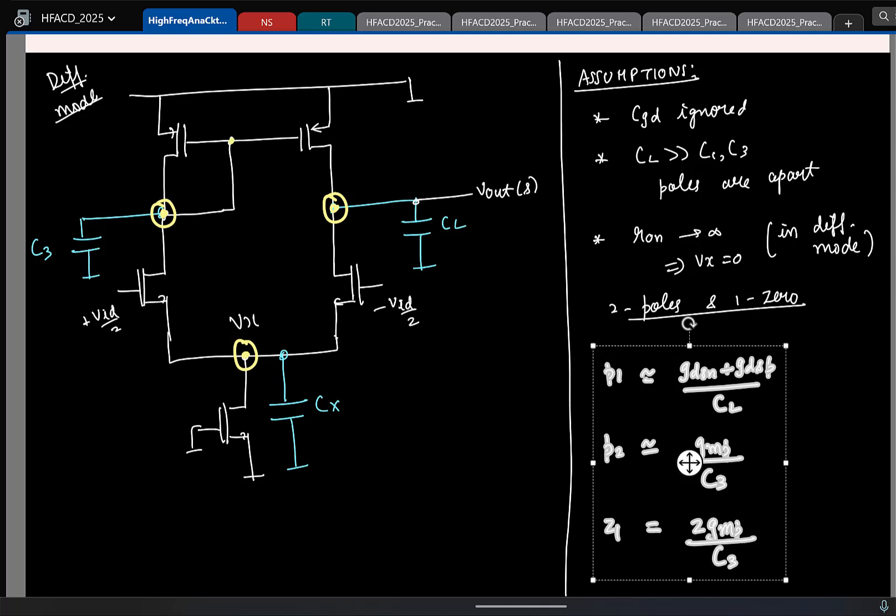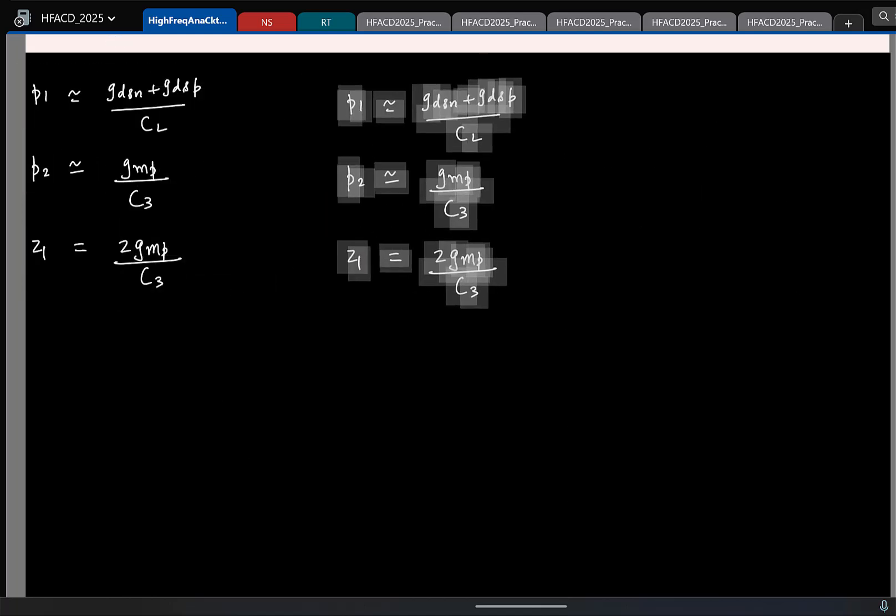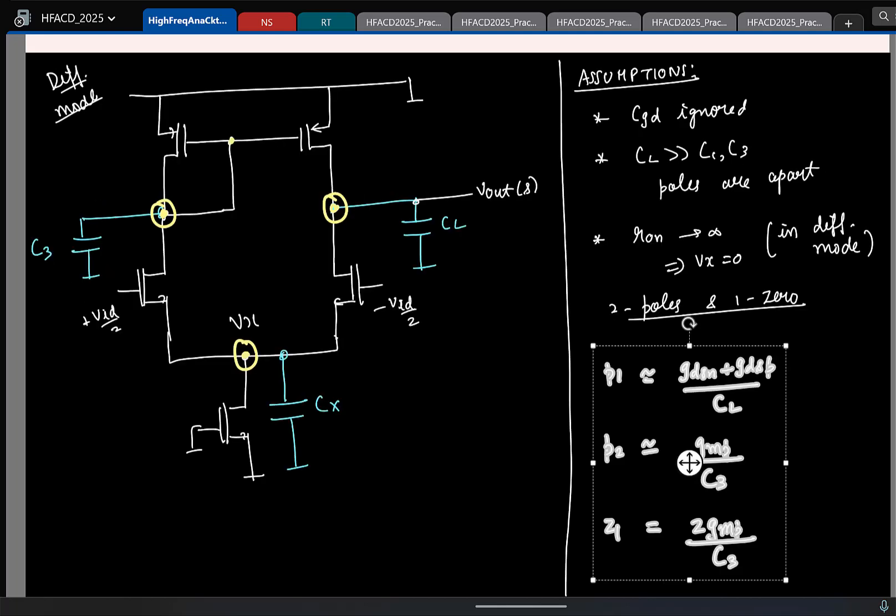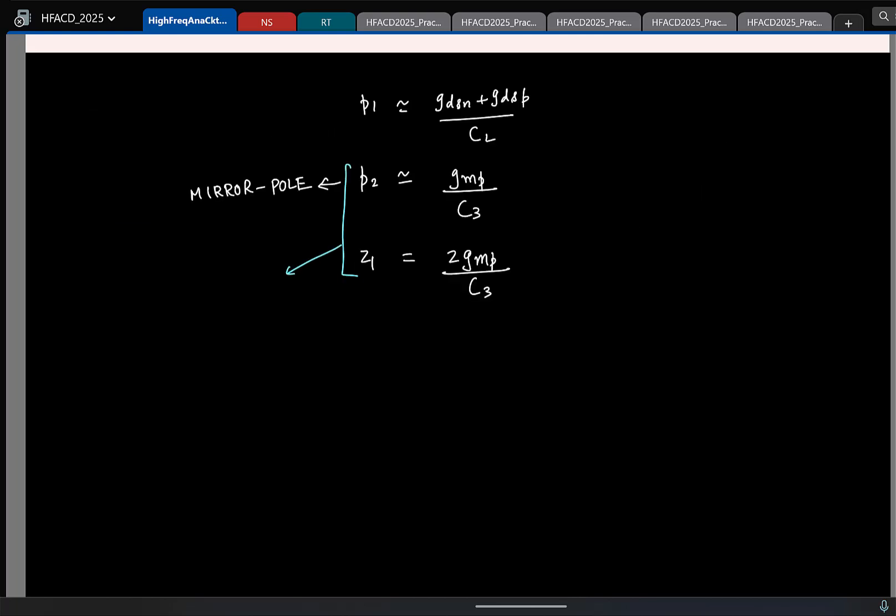We will maybe copy this again and paste it. So, this pole is typically sometimes referred to as the mirror pole, probably because it is coming due to the current mirror. And if you look at these two, you seem to have a pole at Gmp by C3, but it is immediately followed by a zero at 2 times Gmp by C3. So, the same capacitance here is contributing to both a pole and a zero at twice the frequency. This is referred to as the pole zero doublet. These are all jargons for you to save in your mind.